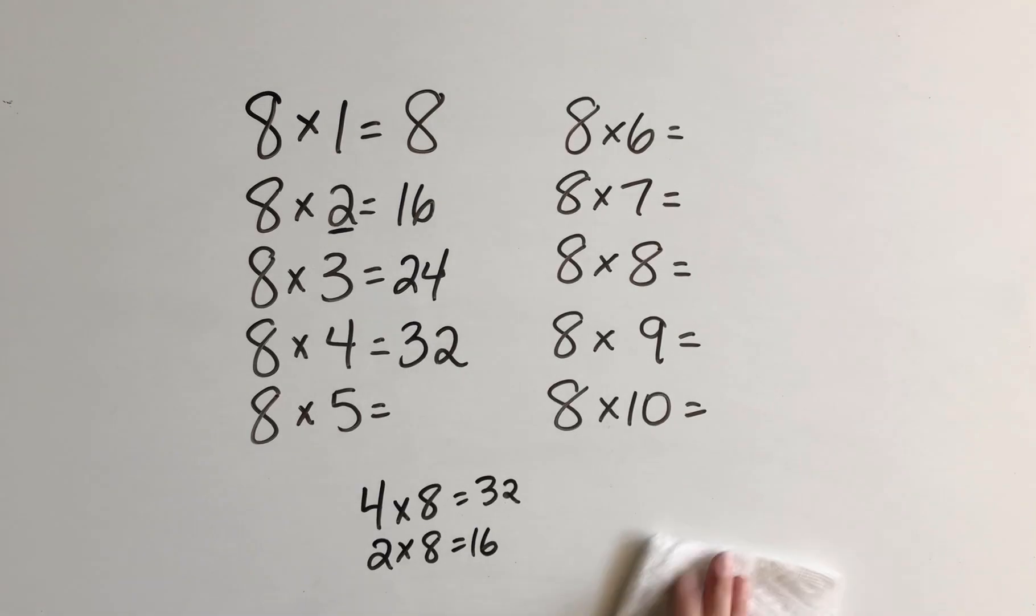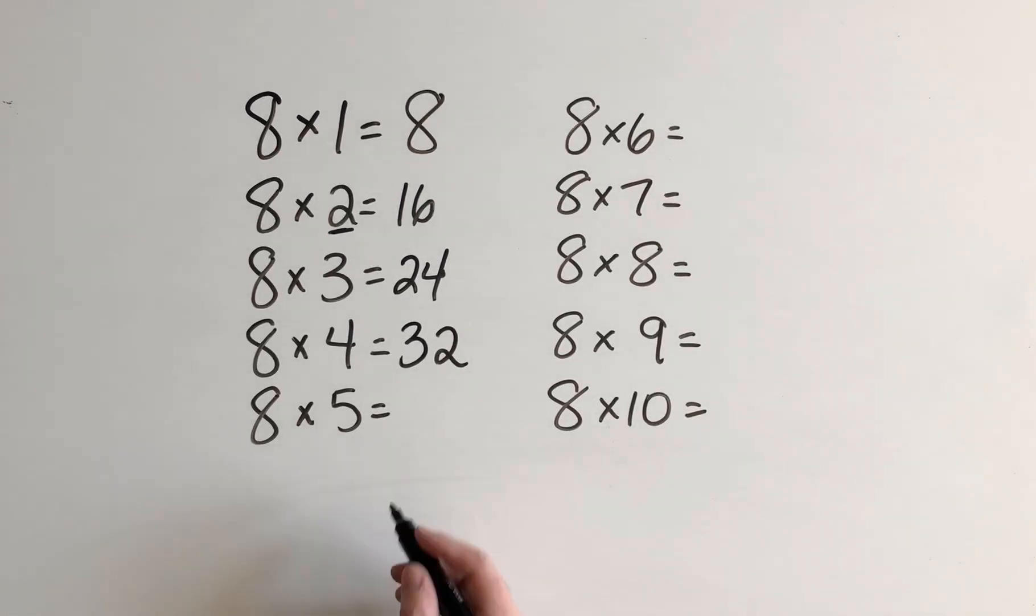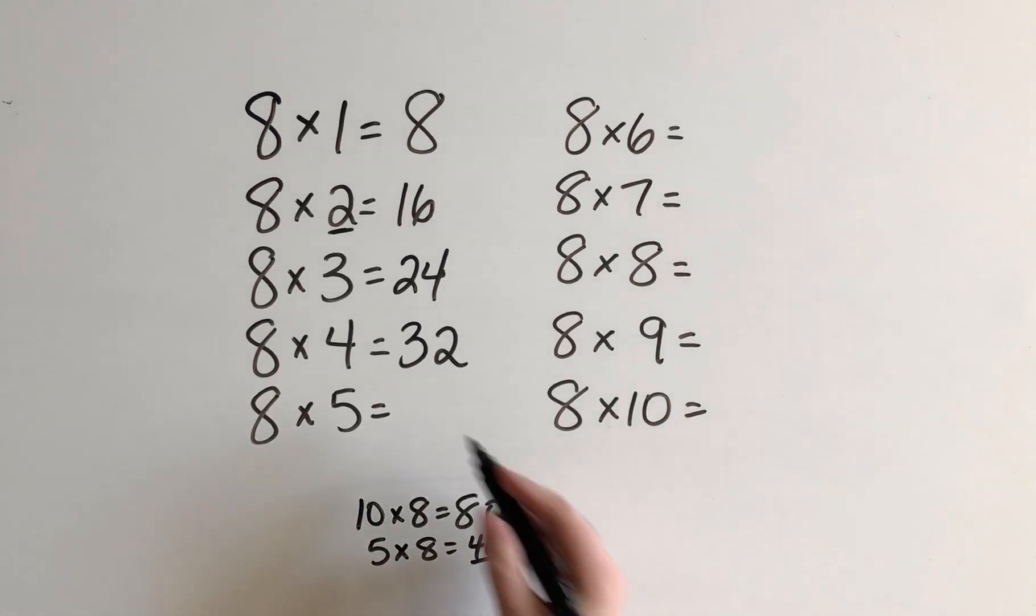Now for 8 times 5, I'm going to think about what I know by multiplying by 10. Because I know that 10 times 8 is 80. 5 times 8 is going to be half of that because I'm taking away half the rows, right? I had 10 rows and now I only have 5. So it's going to be half. It's going to be 40.